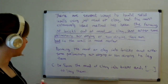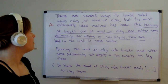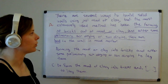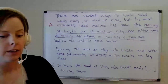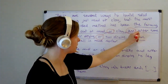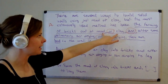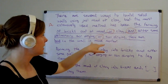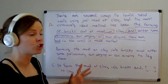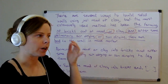All right, let's go through it. Starting with reading A as a whole: 'There are several ways to build solid walls using just mud or clay, but the most extensively used method has been the forming of bricks out of mud or clay, and after some preliminary air drying or sun drying, they are laid in the wall in mud mortar.' Immediately what pops off the page are several parallelism markers — we have these 'or's and we have this 'and.' The 'or' markers are not that interesting here: mud listed with clay makes sense, air drying listed with sun drying also makes sense. The 'and,' on the other hand, is a little more complicated.